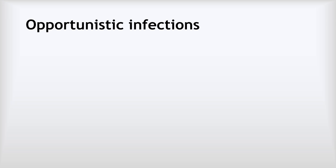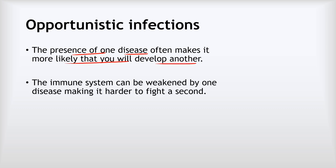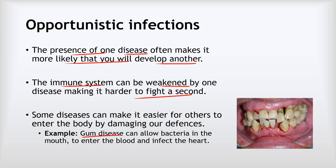Before we look in detail at the types of pathogen, it's worth looking at the idea of opportunistic infections. The presence of one disease often makes it more likely that you'll develop another, because the immune system can be weakened by one disease, making it harder to prevent a second one. For example, gum disease — which can happen if you don't brush your teeth regularly — can allow bacteria to enter from the mouth directly into the blood, infect the heart, and lead to heart disease.